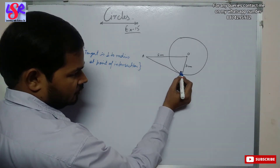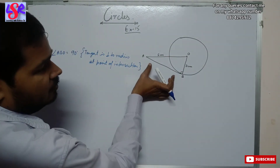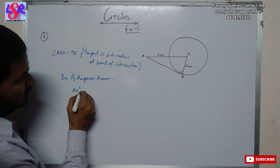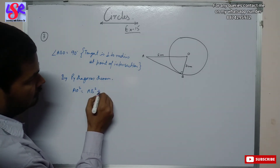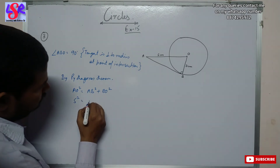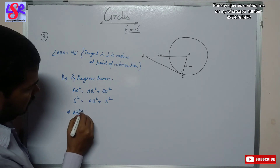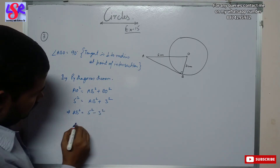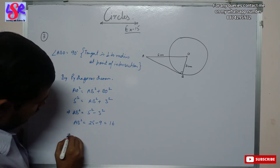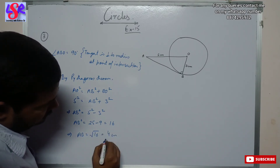Since we have a right-angled triangle, we apply the Pythagoras theorem. By Pythagoras theorem: AO² = AB² + BO². Here AO² = 5² = 25, and BO² = 3² = 9. Therefore AB² = 25 − 9 = 16, which gives AB = √16 = 4 cm as the answer.